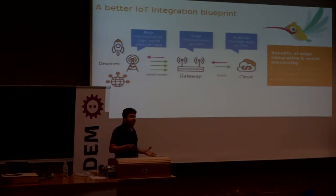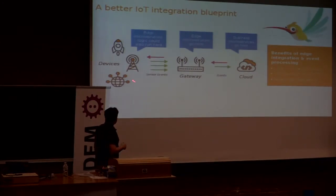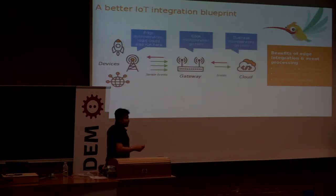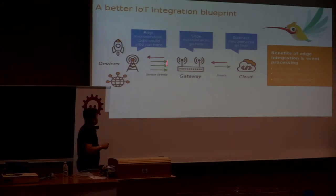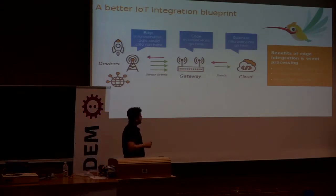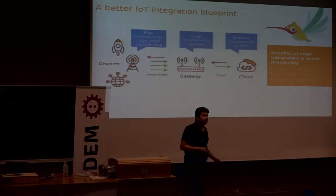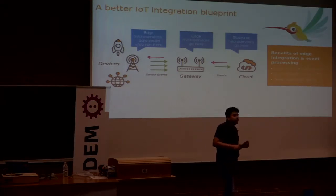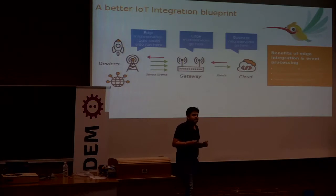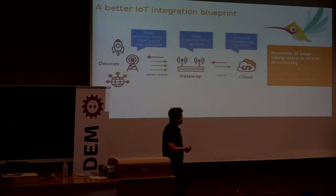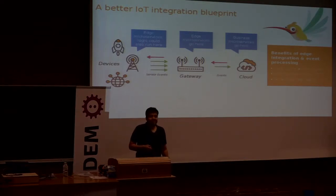A better IoT blueprint looks like this: you have your devices, which are your point of action; then your gateways, which devices communicate with; and eventually the gateways communicate with the cloud. You can bifurcate your logic so that some microservices run on devices, some on the gateway, and if needed you can still leverage the computation power of the cloud. The benefits are: more control, ability to process even when offline since many devices are in areas with poor connectivity, less bandwidth consumed, fewer hops to the cloud, and reduced latency.